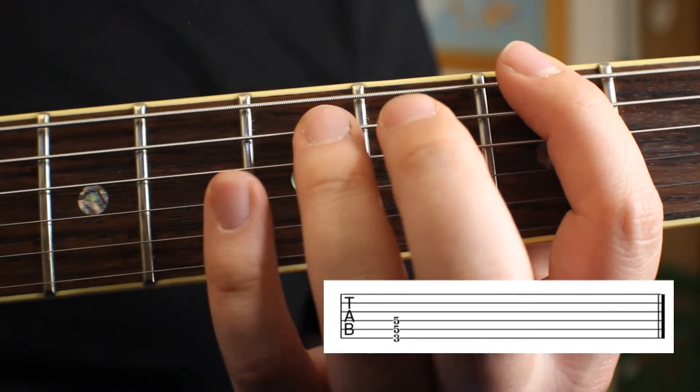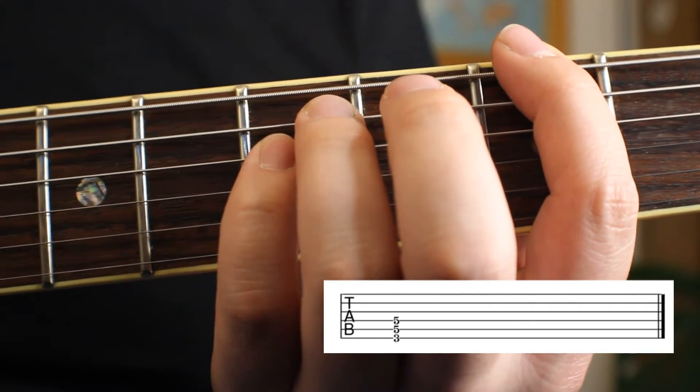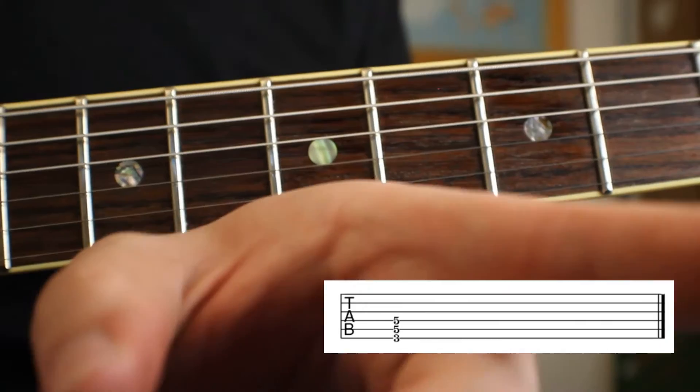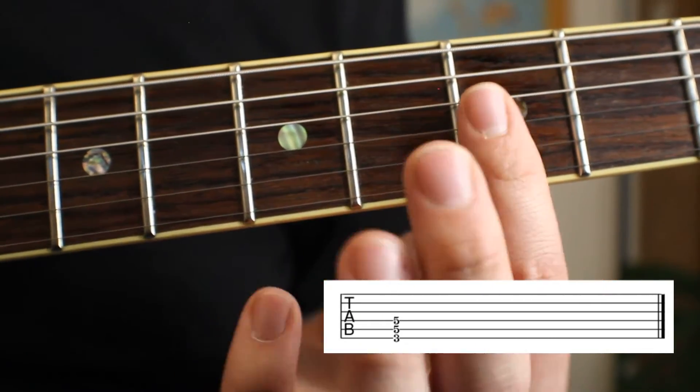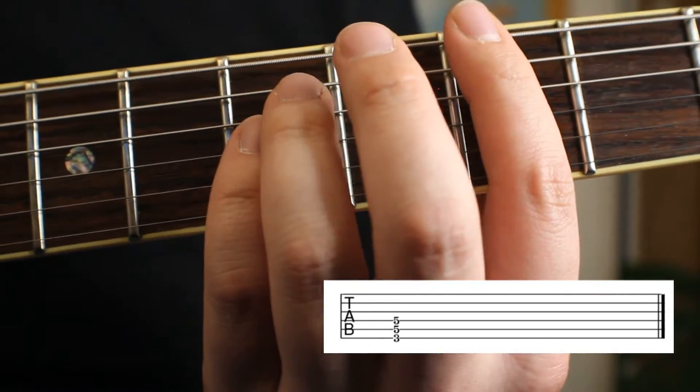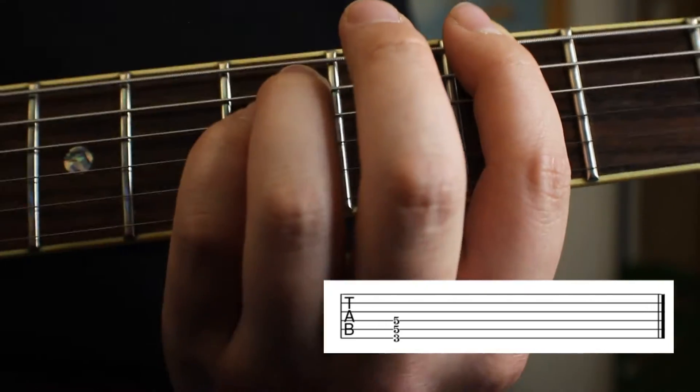This last part is optional, but I like to take my pinky and tuck it right up under the ring finger so it rests on that G, which is the octave. With this part of your pointer finger, you're going to mute the top three strings by resting on them.